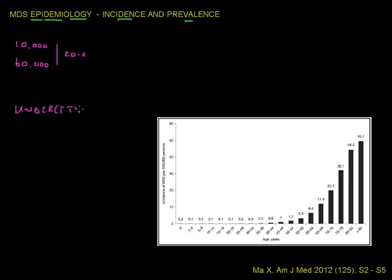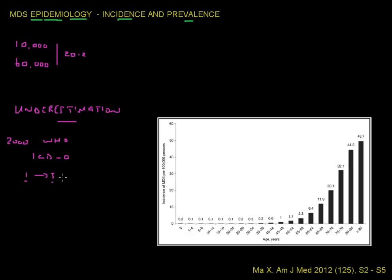If we consider what may have influenced the underestimation of this disease: one key factor is that in the year 2000 the WHO reclassified the behavior code of MDS within the ICD oncology category from a 1 to a 3. A code of 1 was a category with uncertainty about whether the disease was benign or malignant, but a code of 3 means it is now widely accepted that this disease is a malignancy. So MDS is a cancer.